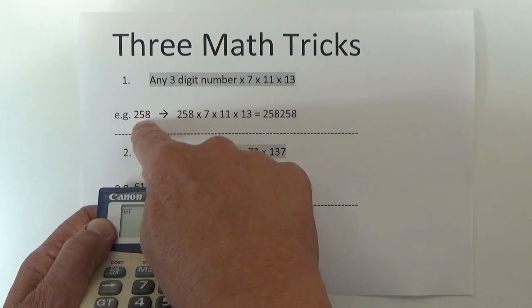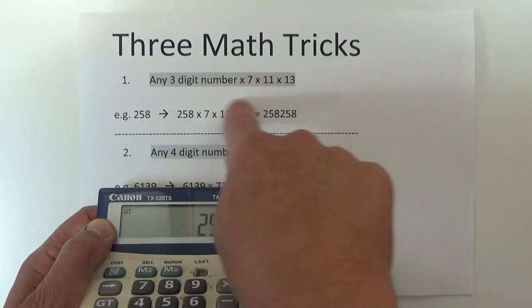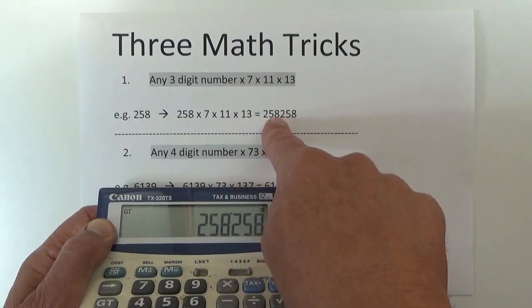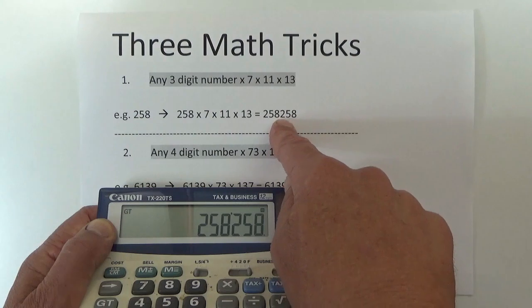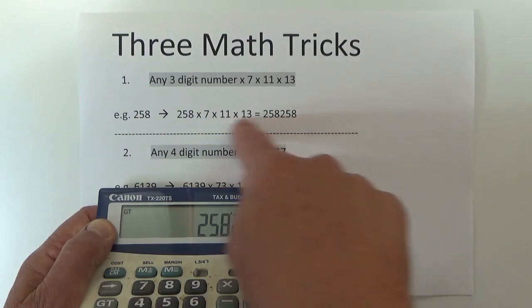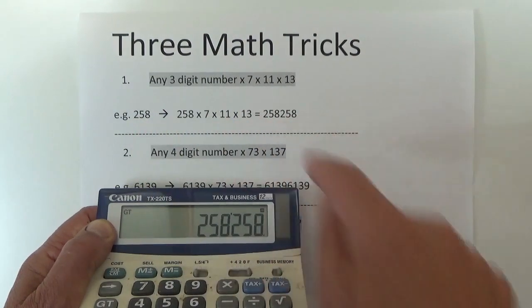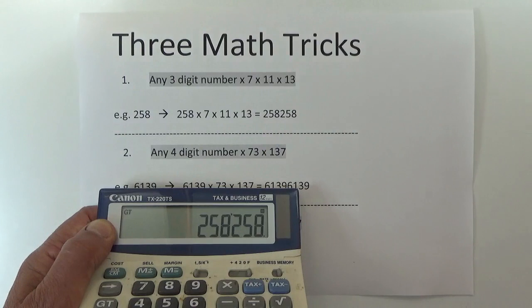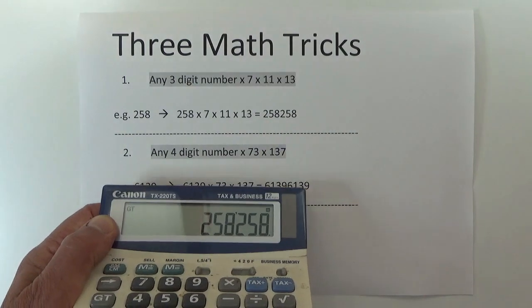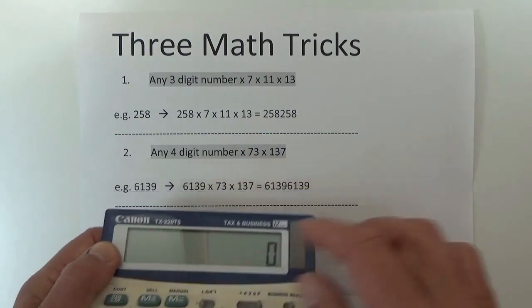So basically you start off with 258, you multiply by those three numbers, and then the answer is 258258 — the original number appears twice in the answer. That's pretty cool.